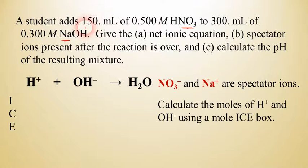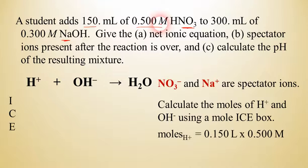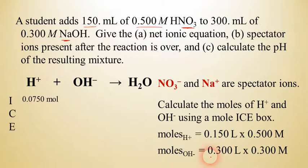If we take 0.15 liters times 0.5 molar, we can figure out the moles of the acid. So 0.15 times 0.5 would be 0.075 moles. So that's how many moles of acid. We do the same thing for the base. We take 0.3 molar times 0.3 liters. And so for the hydroxide, we can see that's going to be 0.09 moles of hydroxide.